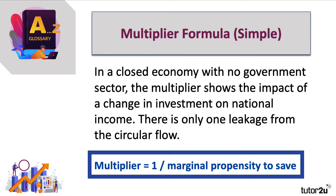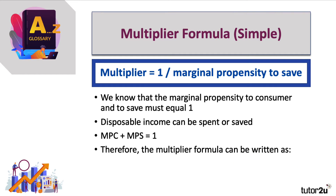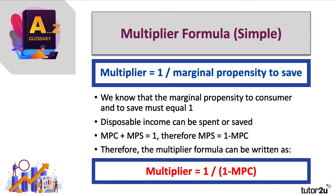The multiplier formula is one divided by the marginal propensity to save. The higher that propensity, the more money leaks out of the system every time money goes around the circular flow. We know that the marginal propensity to consume and to save must equal one — disposable income can be spent or saved — so MPC plus MPS equals one. Therefore, we can write the multiplier as one over one minus MPC, because the marginal propensity to save is one minus the marginal propensity to consume.